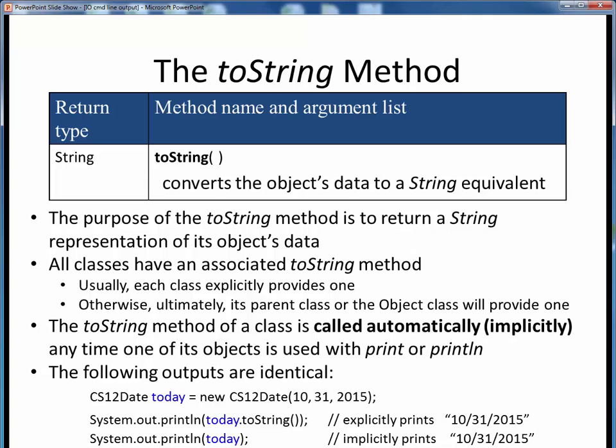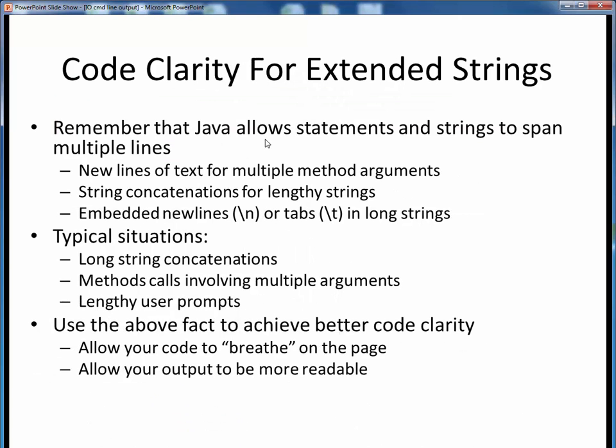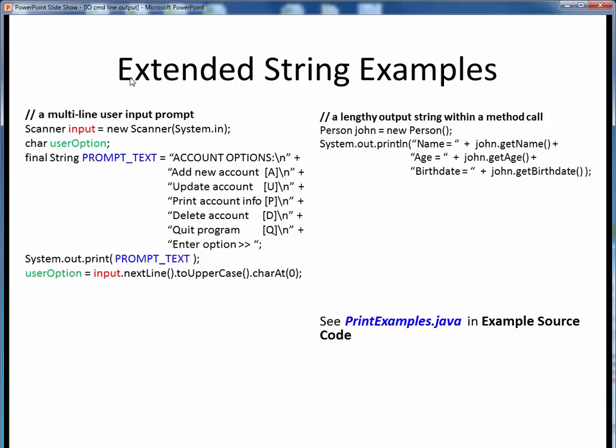Now remember that for lengthy strings, Java allows both the source code statements and any resulting outputs to span multiple lines. On the source code side, we can break up long print statements over multiple lines using string concatenation. And on the output display side, we can make our output text more readable by embedding within it such characters as a backslash n newline or a backslash t tab. Use these types of things in your code for improved code clarity and readability. As I often like to say, let your code breathe, both on the page and in the output that it displays.